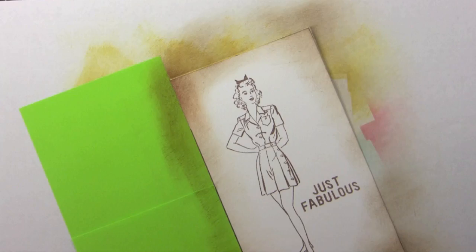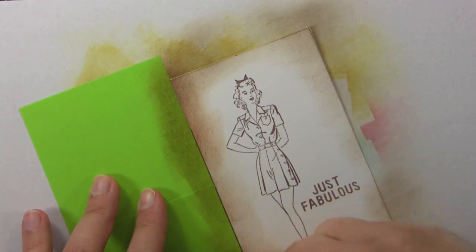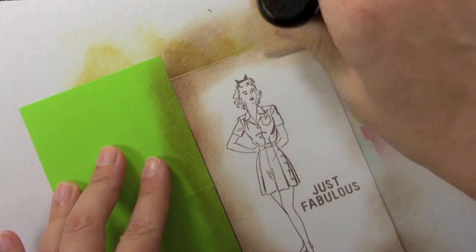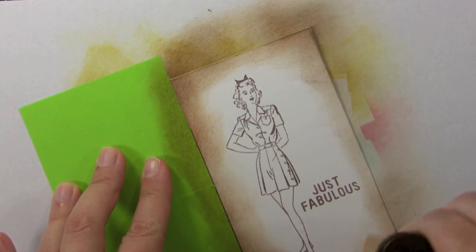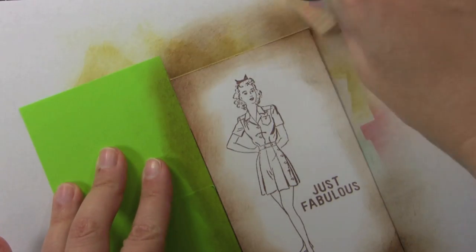Now I'm going to go back over everything again with a little bit darker shade. This is the Tea Dye Distress Ink. And I'm just going to go along all the edges with that. That's looking pretty good.